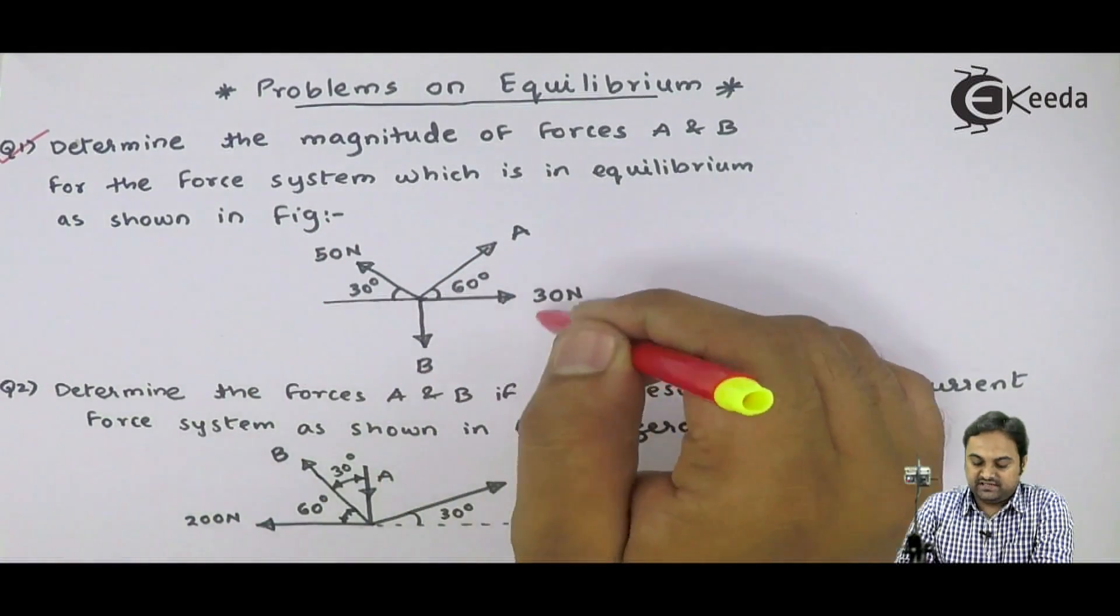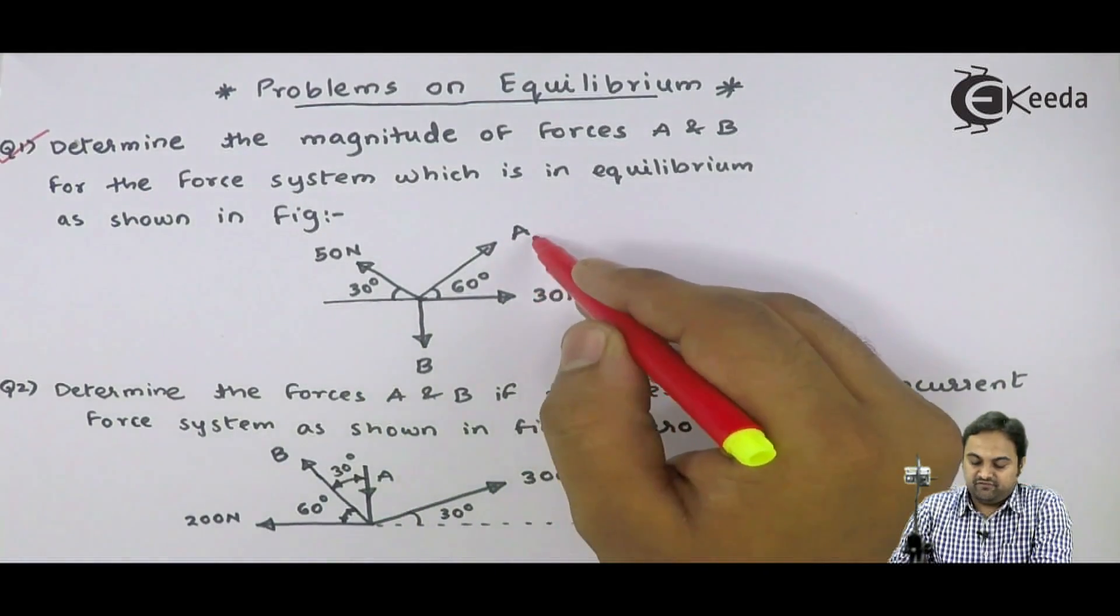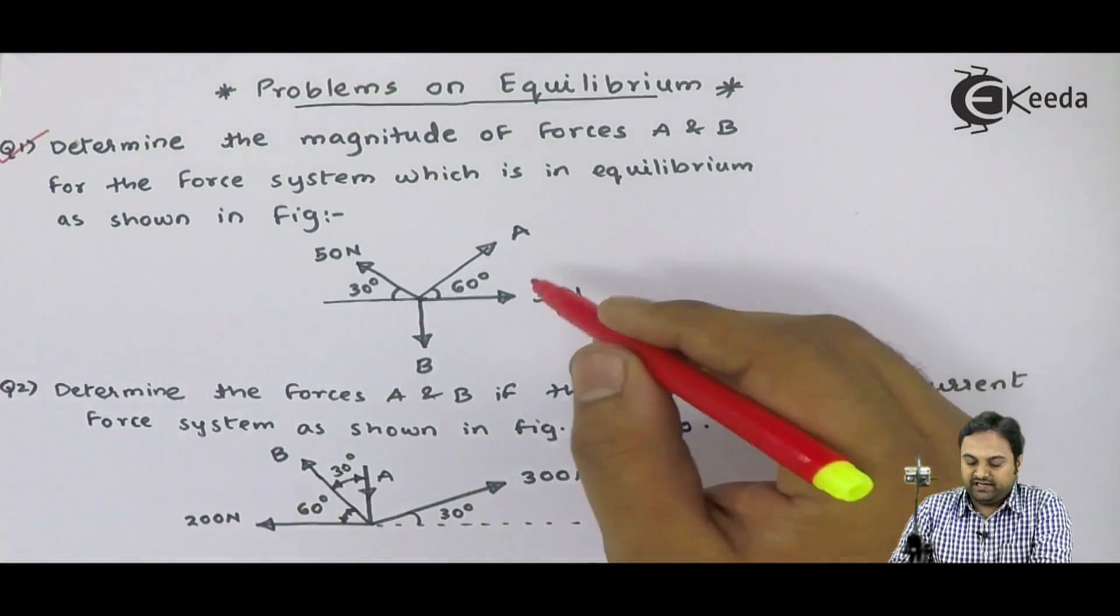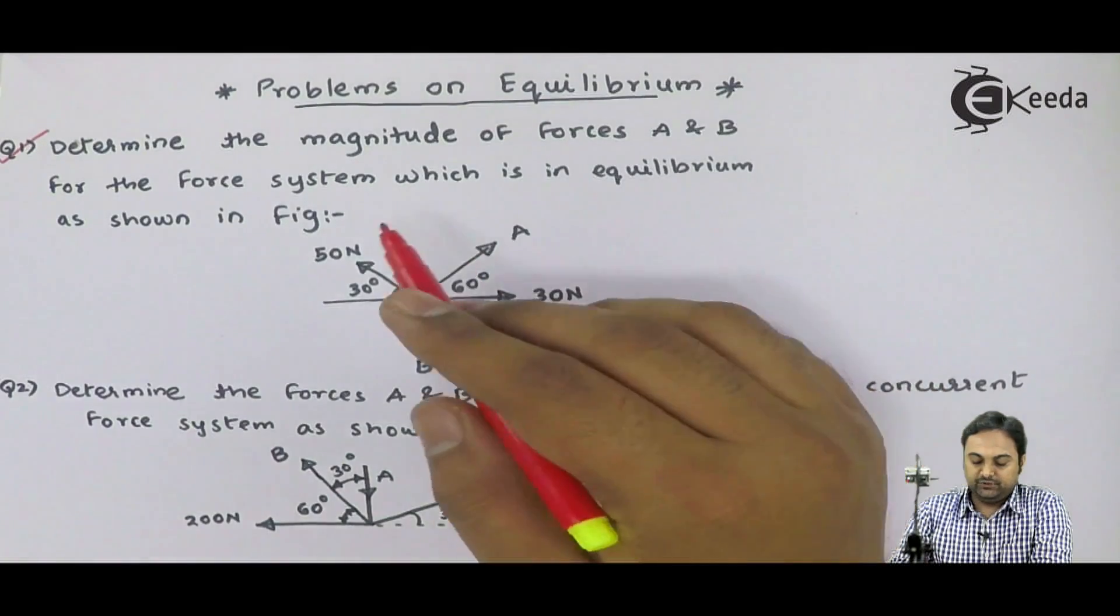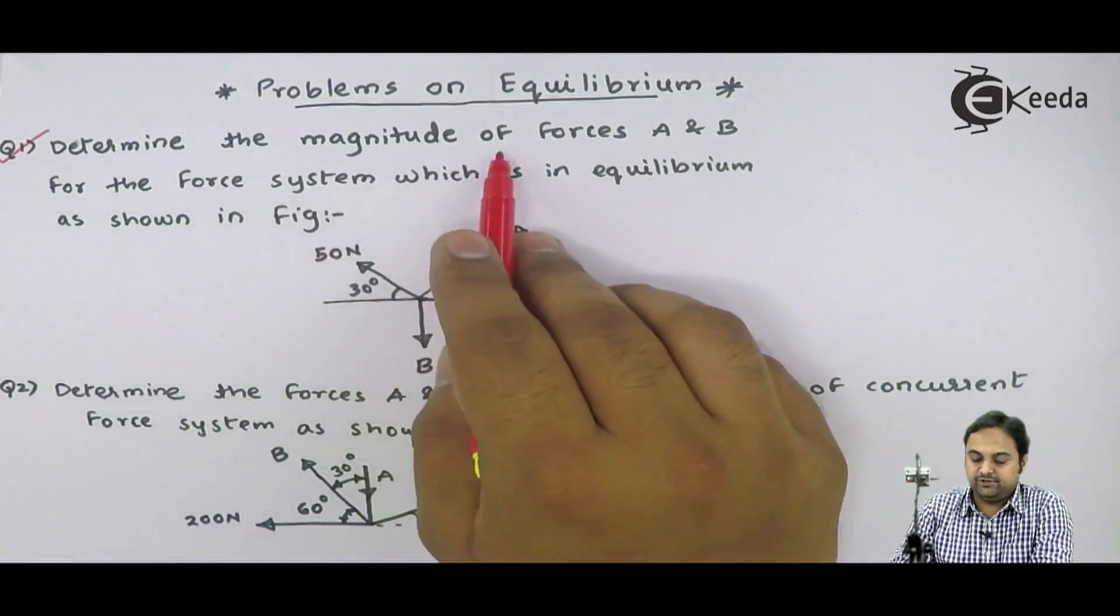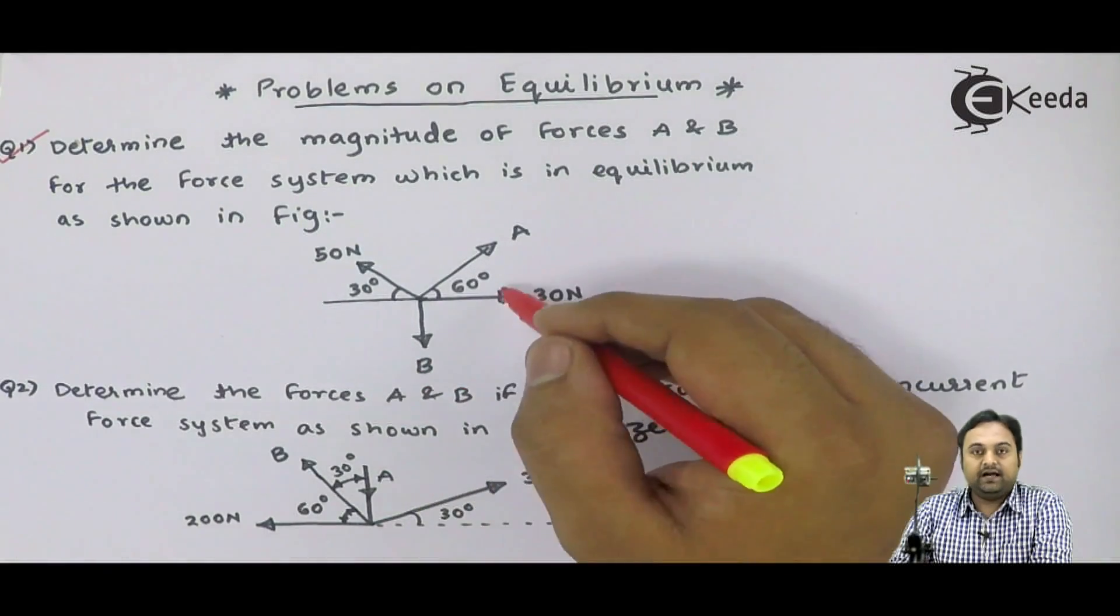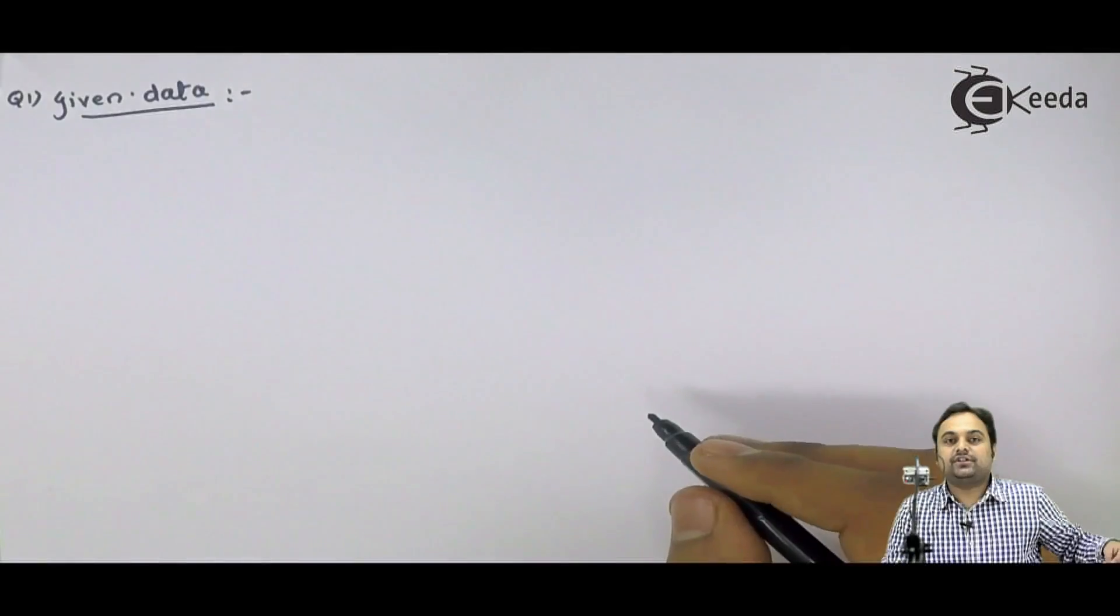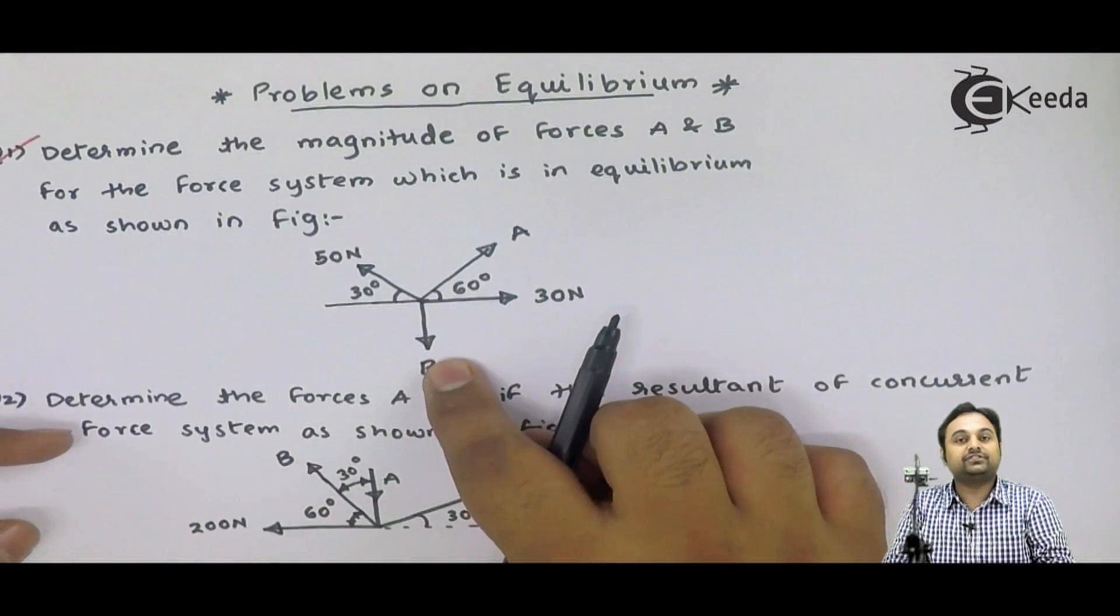Here they have given us a diagram. In this diagram there are four forces given. Two forces are directly given: 30 Newton and 50 Newton. We need to find the magnitude of forces A and B, the unknown forces. For this question we will write the data first. I will draw this diagram again.